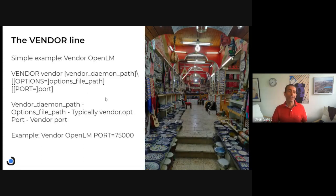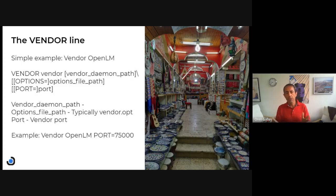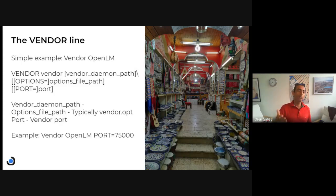The next line is the vendor line. A simple example is just 'VENDOR openlm.' The format also allows additional options. We see the vendor keyword, then the vendor name, then the vendor daemon path — the path to the executable created by the vendor that handles all licensing actions. You may not see this often because most people use the default installation structure where it's handled automatically, but you can specify it. Similarly, the option file path: if you name it vendor.opt — like openlm.opt — it's found automatically, but you can specify a custom path.